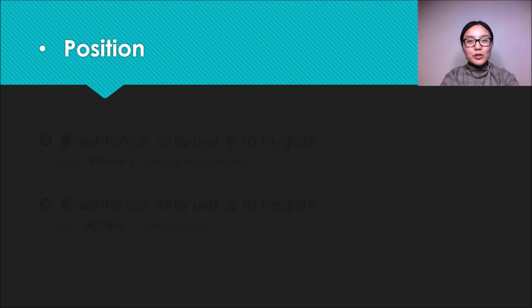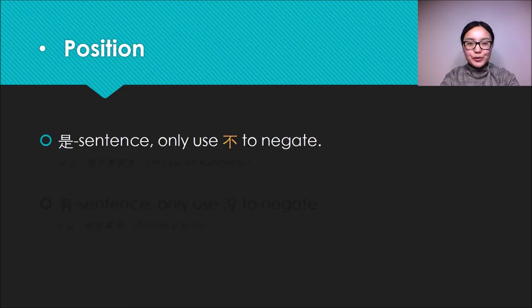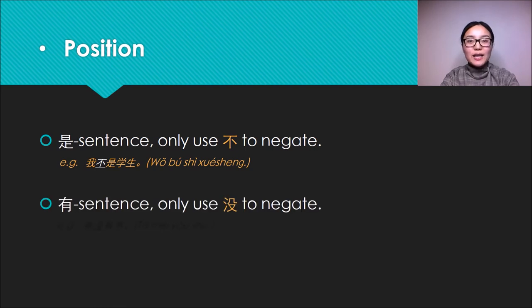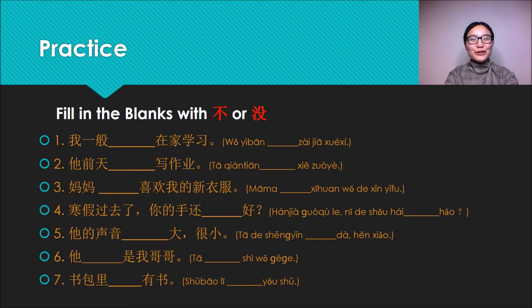The last part about position, let's focus on some special sentences. In 是 sentence, we only use 不 to negate. For example: 我不是学生 (I'm not a student). In 有 sentence, we only use 没 to negate. For example: 他没有书 (He doesn't have book). Have you got it?